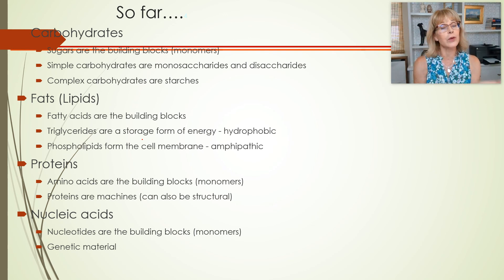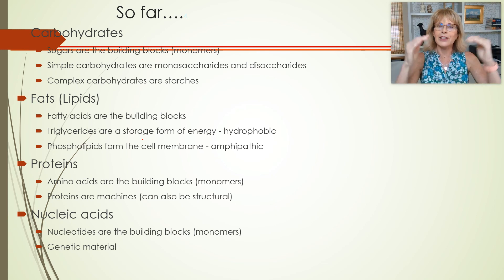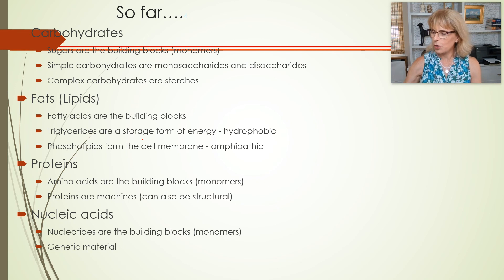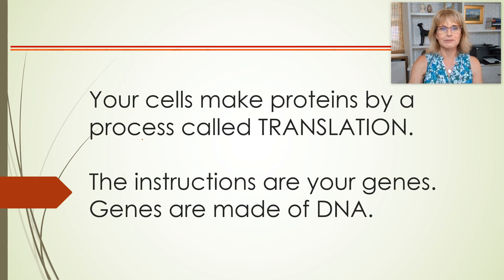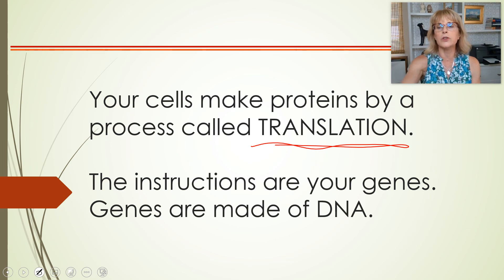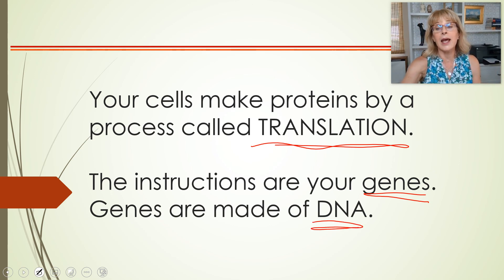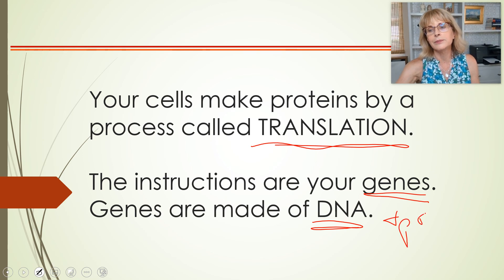That covers the nucleic acids as biomolecules. Now we'll talk about how DNA is organized in your cells and how it serves as the template for making proteins. Your cells make proteins by a process called translation. The instructions for building proteins are your genes, genes are found in chromosomes, and chromosomes are made out of DNA and protein.